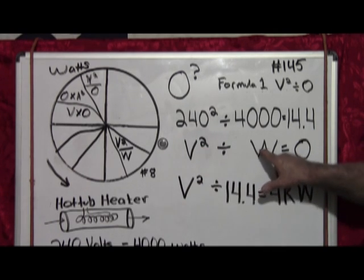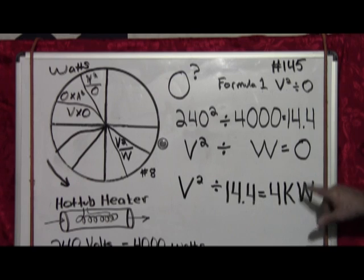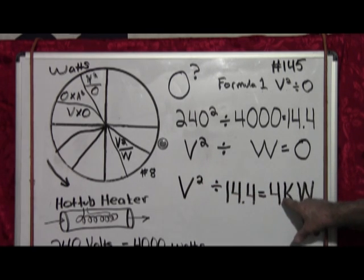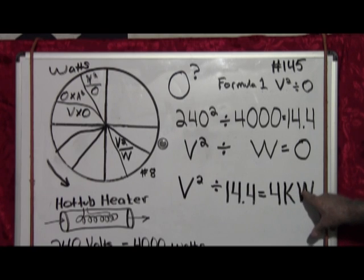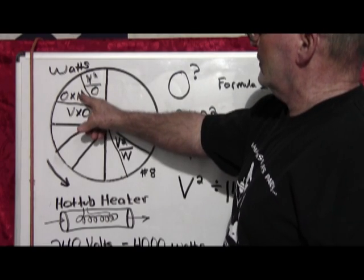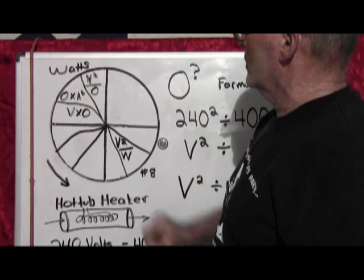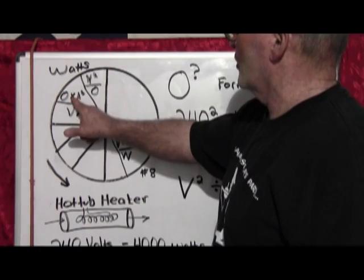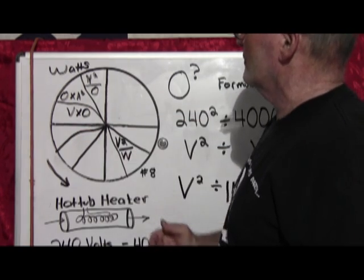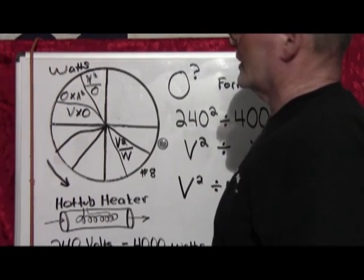So volts squared divided by watts equals ohms. V² divided by 14.4 is equal 4 kilowatts or 4,000 watts. That solves for equation number one. Let's move on to equation number two, which is ohms multiplied by amps squared will give you watts. Well, we've got to solve for amps, don't we? That's not a problem.